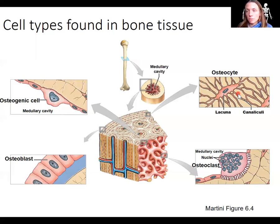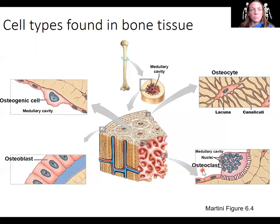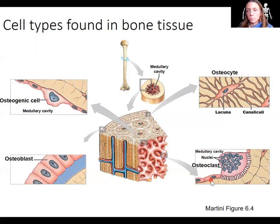The last cell type we haven't talked about before are osteoclasts. These are larger cells with multiple nuclei, which is unique. I think of 'clast' as like calamity — they break down bone tissue. So blasts are making collagen and clasts are breaking down bone tissue. They dissolve it, which changes calcium phosphate levels and releases calcium into the blood. This is important for blood calcium and pH levels, as well as the remodeling of bone in adulthood.